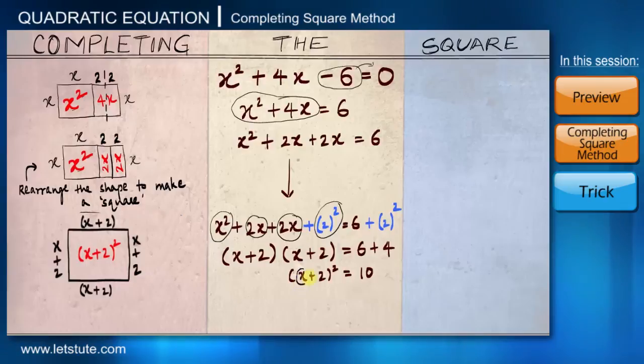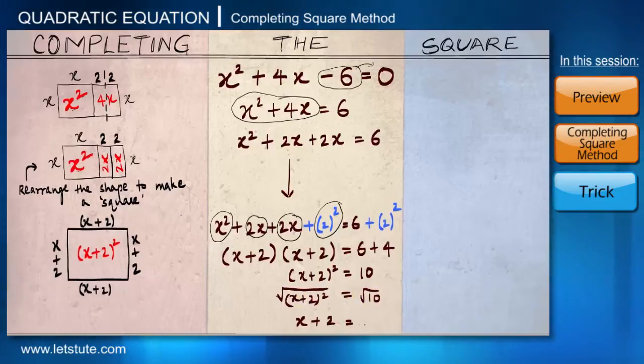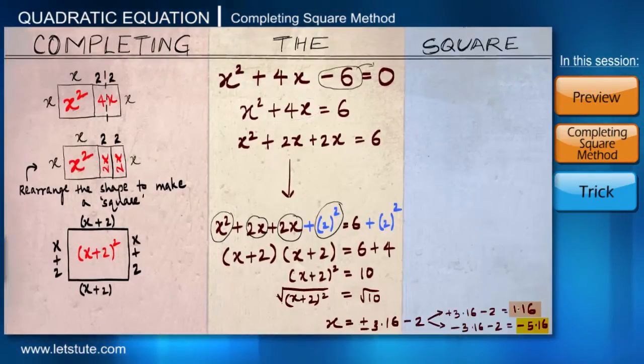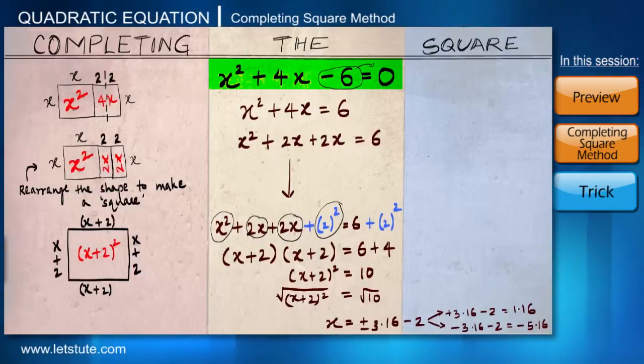Now, if I want to find the value of x, the next step is very easy. I just have to take square root on both the sides. Root of (x + 2)² will give me x + 2, and root of 10 would be approximately ±3.16. If I take even this positive 2 to the other side, we will get two possible values for x: one will be +1.16 and the other would be -5.16. So for this equation x² + 4x - 6 = 0, after solving it we get two possible values of x.